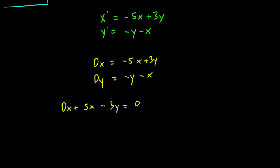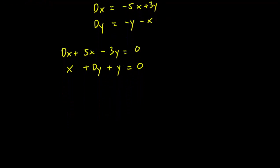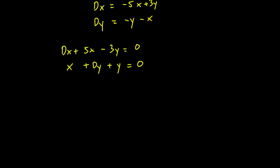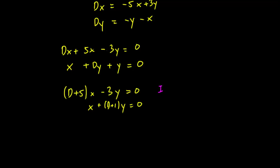Similarly with the other equation, we want the x term first. We have x plus dy plus y equals 0. So this is our system and we can factor out the terms by x and by y. Let's label the first equation as Roman numeral 1 and the second equation as Roman numeral 2.